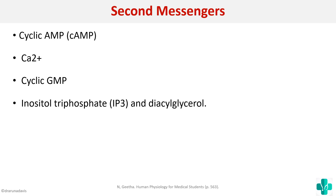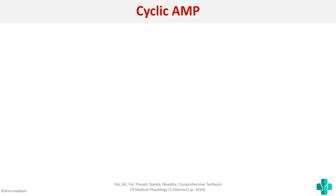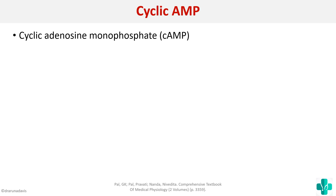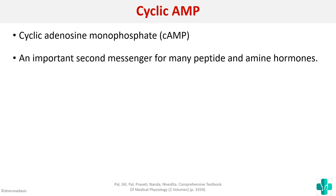Now we will move on to the topic proper, which is cyclic AMP. The full form of cyclic AMP is cyclic adenosine monophosphate, and it is an important second messenger for many peptide and amine hormones.